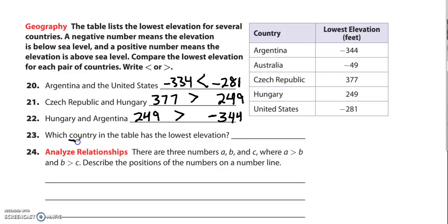Question 23 asks which country in the table has the lowest elevation. Lowest means farthest to the left on a number line. And so that's going to be negative, with three options we've got negative 344, negative 49, negative 281, and the one that's farthest to the left on the number line would be Argentina because it's at negative 344.